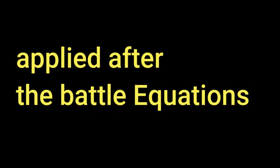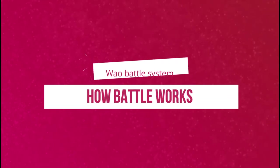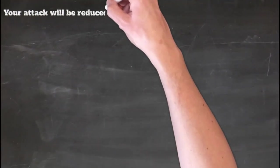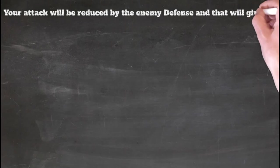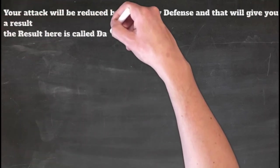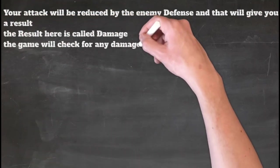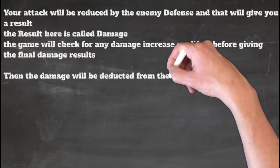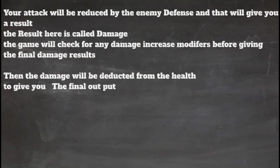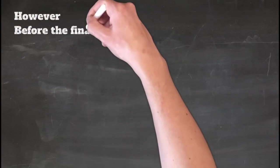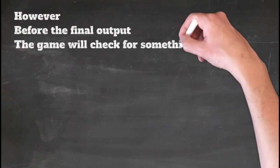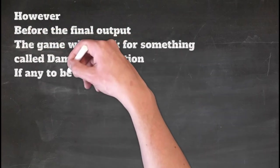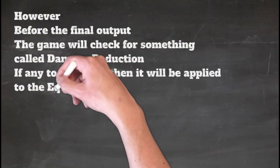Modifiers are those who change the result of the battle equation. Here is how the battle is done: your attack will be reduced by the enemy defense, and that will give you a result. The result here is called damage. Then the game will check for any damage increase modifiers. Then the damage will be deducted from the health to give you the final output. However, before the final output, the game will check for something called damage reduction. If any is found, it will be applied to the equation, and this will change the results.